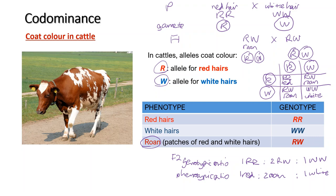So again, this ratio is 1:2:1, and it is not like the 3:1 ratio seen in simple Mendelian genetics.